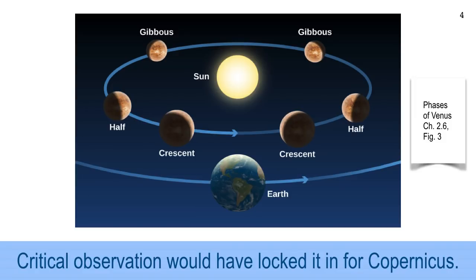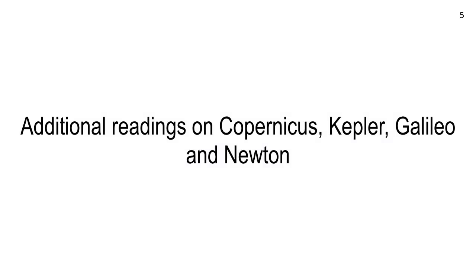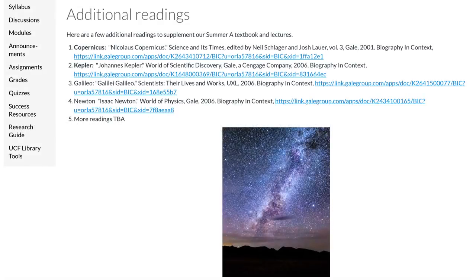To help you dig in a little bit further on these four guys, they're pretty important in the history of astronomy. I've set up some additional readings, pretty short little blurbs from the UCF library database system. Here's the links. It's in webcourses, the additional readings page, and just click on them. They're set so that you can look at them from off campus. You'll have to log in with your NID. If you're on campus, it'll just go click right through. Go ahead and read those, and I may ask you a question or so from each of those on exam number one.